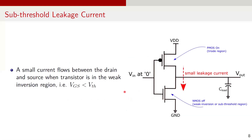Now let's talk about static power consumption in CMOS circuits. We will discuss three main contributors: sub-threshold leakage current, gate tunneling current, and reverse bias PN junction leakage current. The sub-threshold current is the current that flows between drain and source when a transistor operates in the weak inversion region, i.e., when the gate voltage is below the threshold voltage. For instance, in an inverter circuit, it is typically assumed that when the input voltage is 0, the NMOS transistor is off and there is no current flow. However, in reality, a small sub-threshold leakage current still exists through the NMOS transistor in this state.